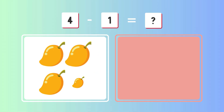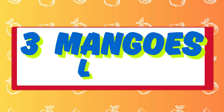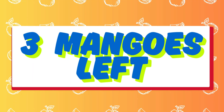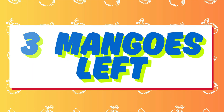Last one. Four minus one equals? Five, four, three, two, one. Three mangoes left.